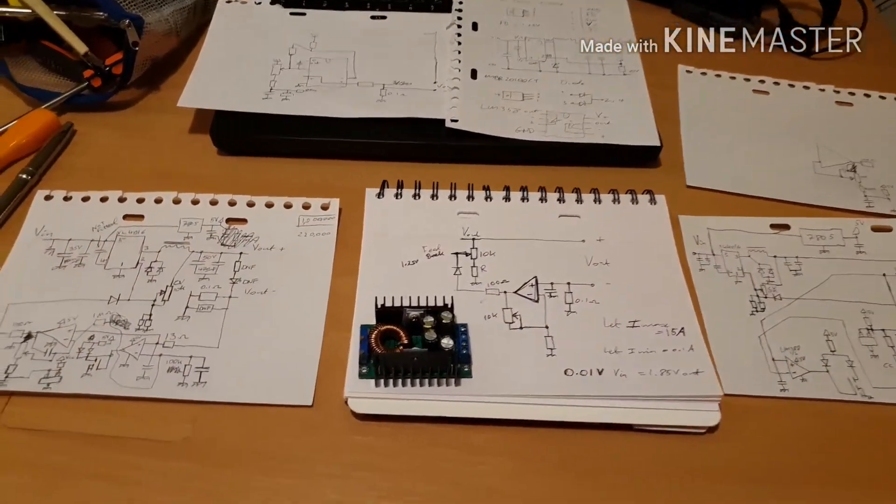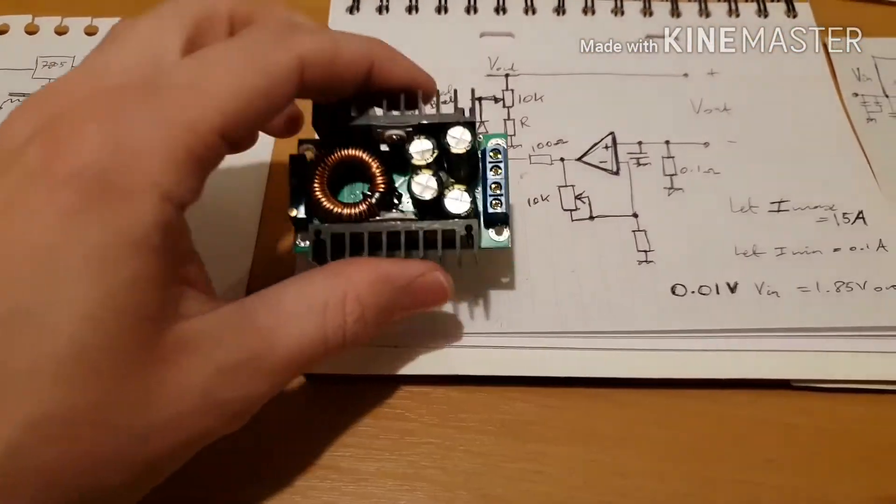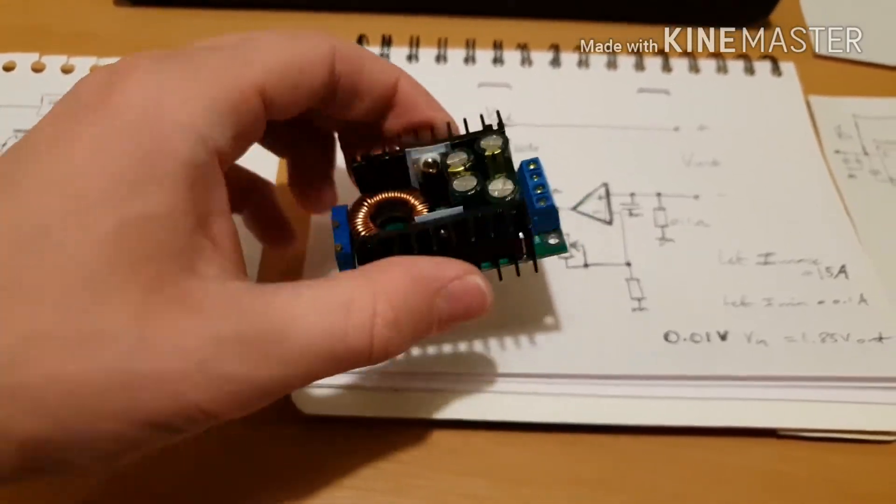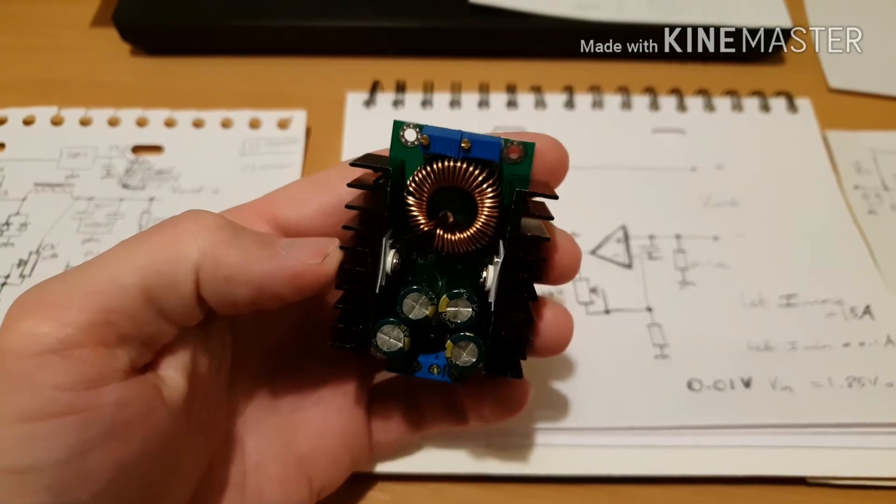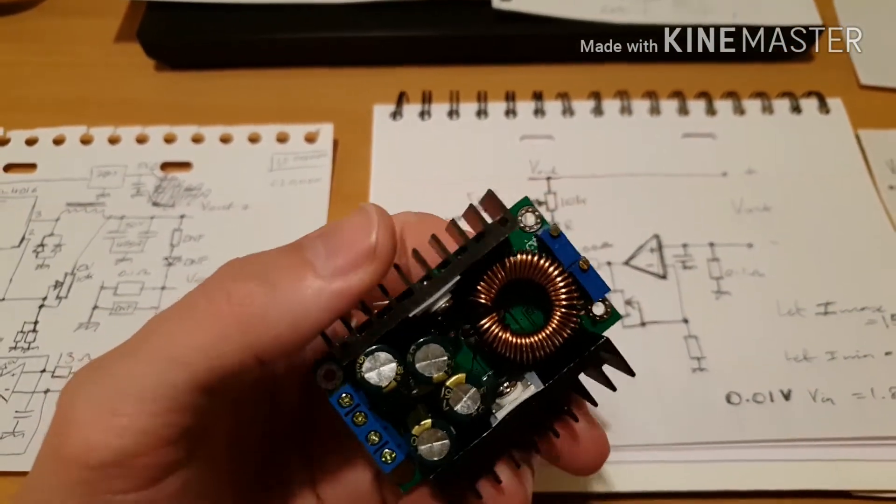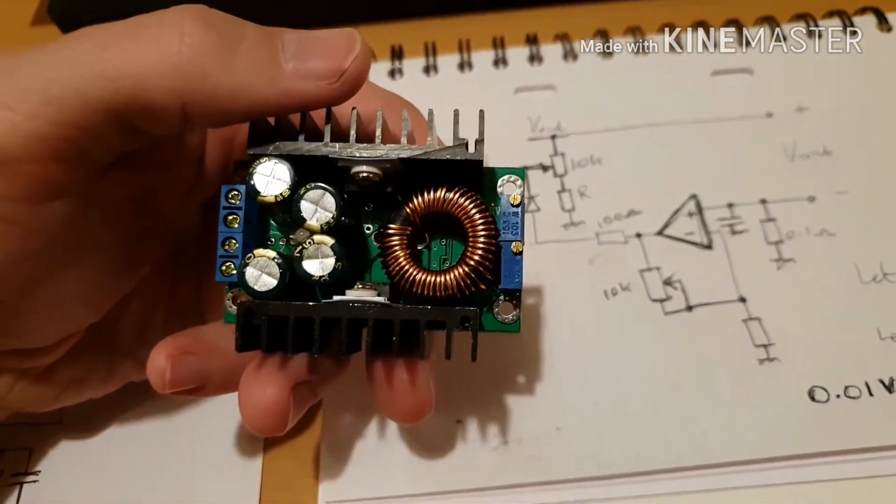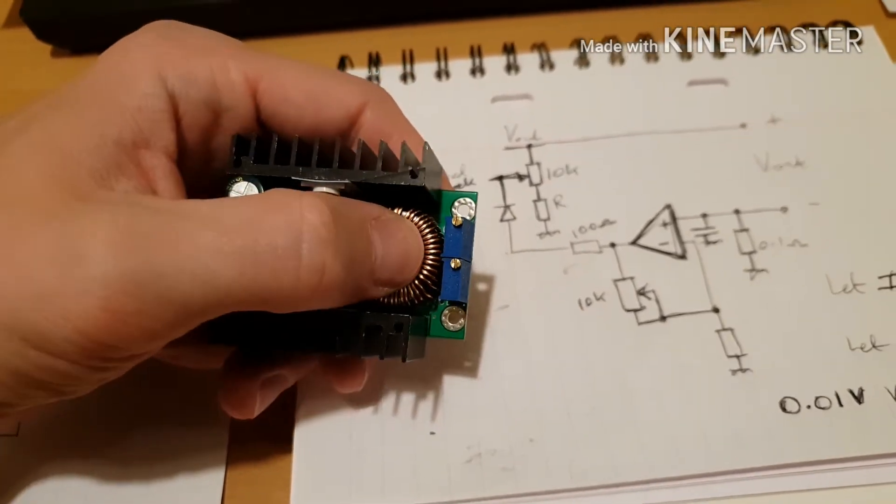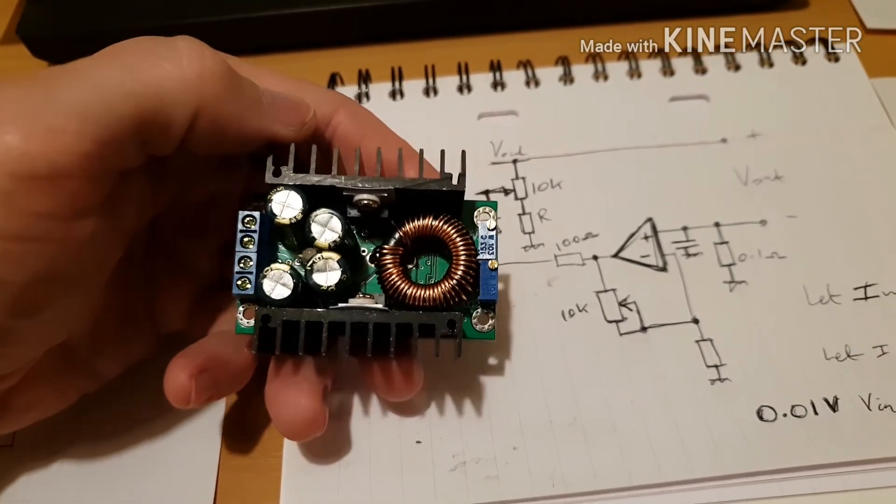I've got this constant current, constant voltage power supply reversed out. This thing was £6-7 on eBay and in theory these two little potentiometers on the top are supposed to set current and voltage. Under low load it limits on constant voltage and then when you nudge over the current limit, it's supposed to start bringing the voltage down to keep the current constant.